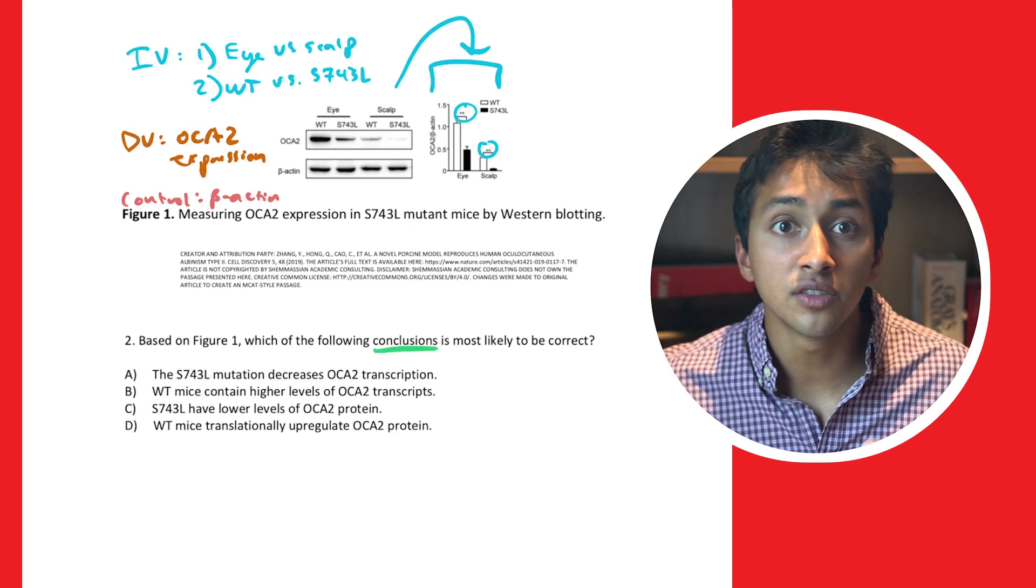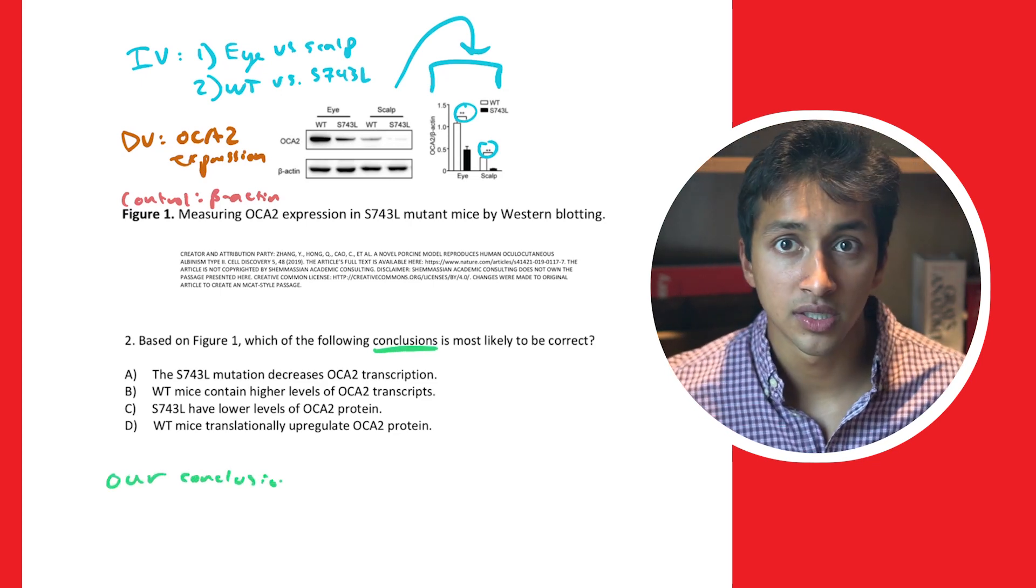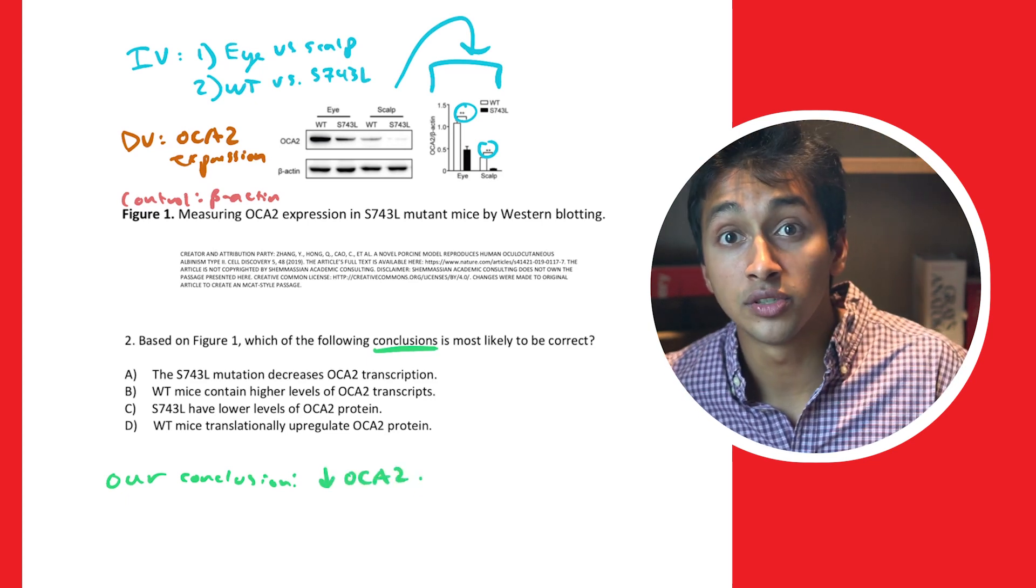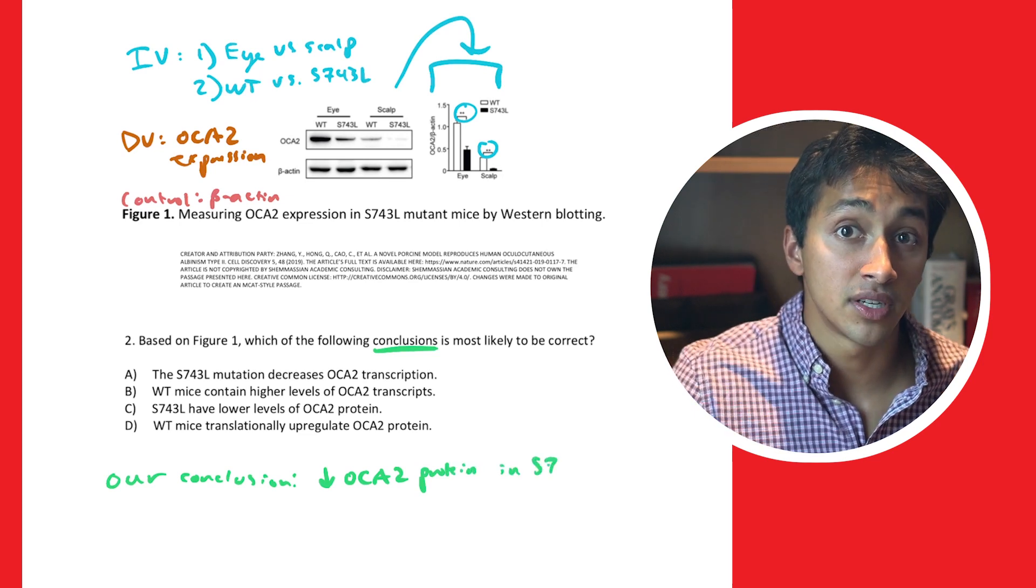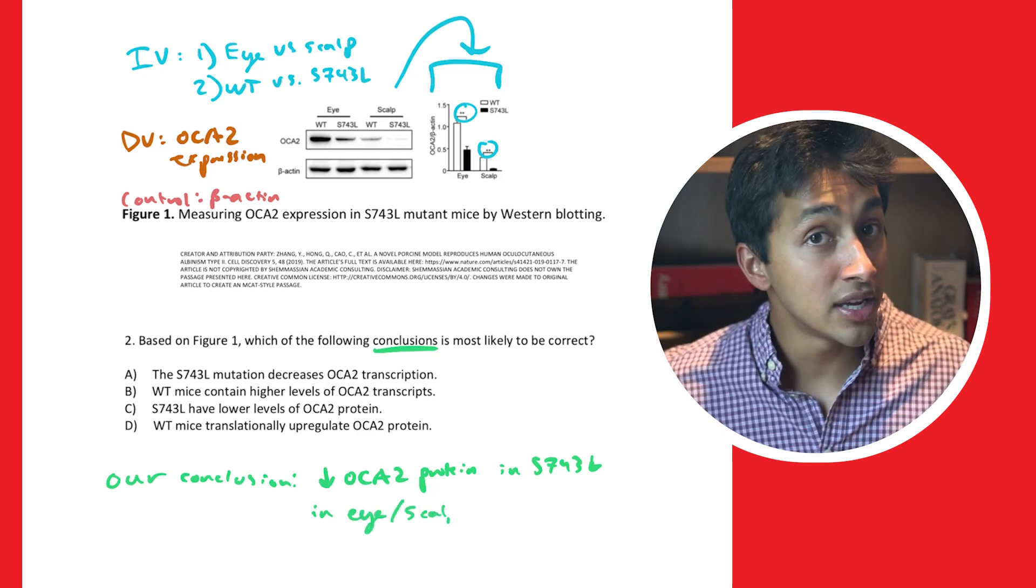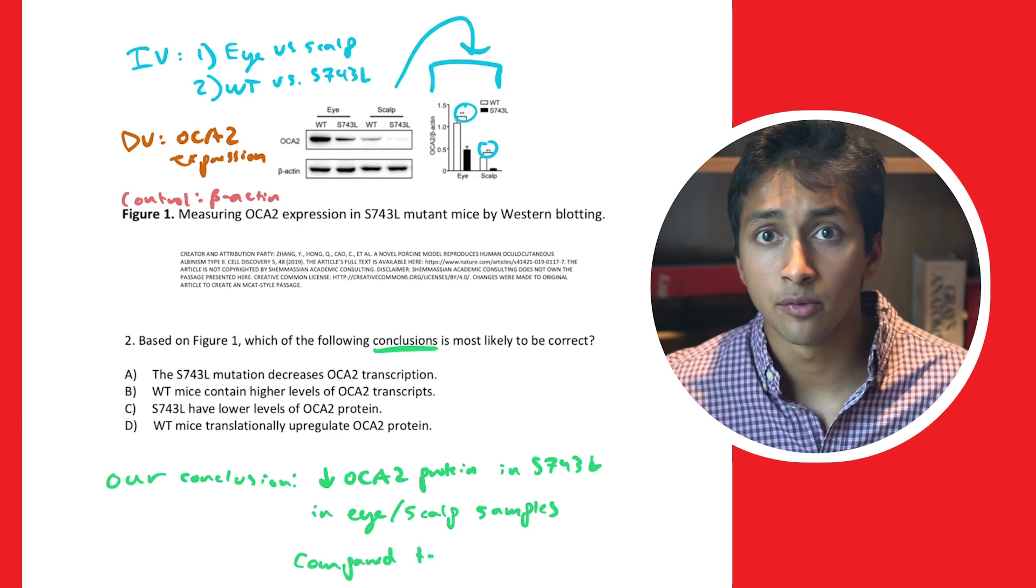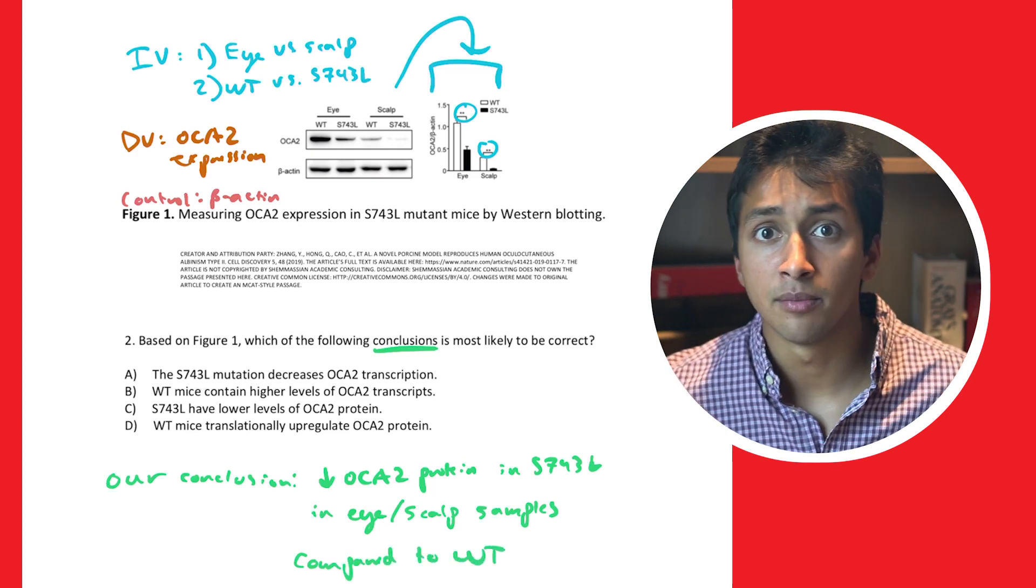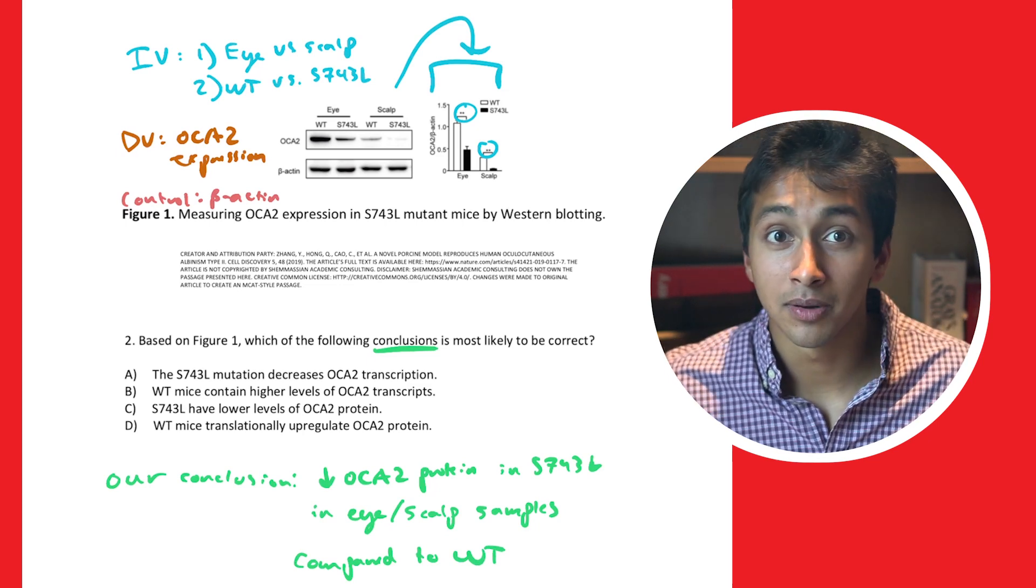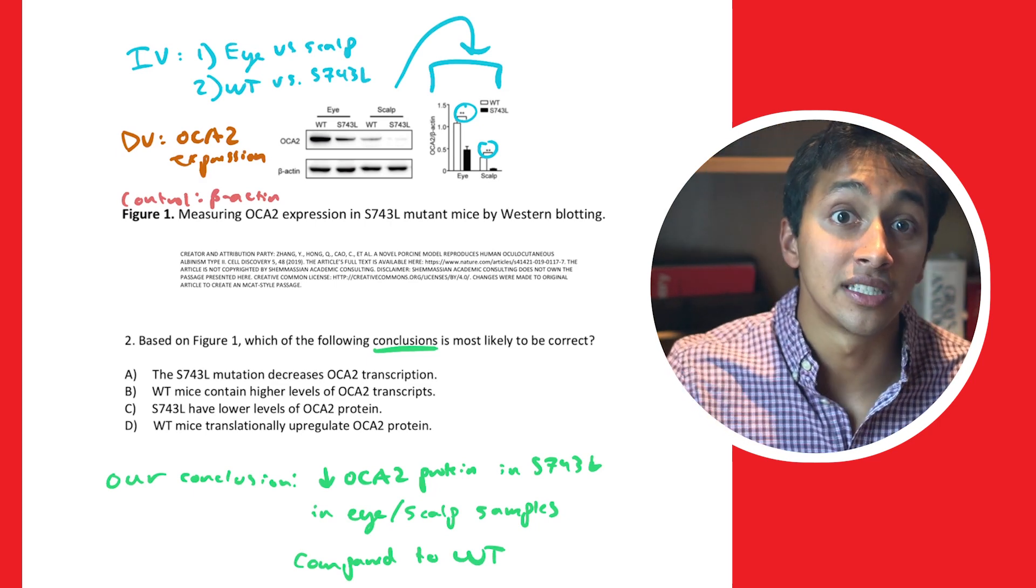Let's now move on to our final question. Based on figure one, which of the following conclusions is most likely to be correct? Now, before I read the answer choices, remember that we concluded that there's a statistically significant lower ACA2 protein expression in the S743L mutant condition in both the eye and scalp samples when compared to wild type. I know that's a mouthful, but let's keep that in mind as we go through our answer choices. Answer choice A reads, the S743L mutation decreases ACA2 transcription. That looks like a great answer, but there's one key piece that's incorrect. Remember, a Western blot measures protein levels, which is a result of translation.